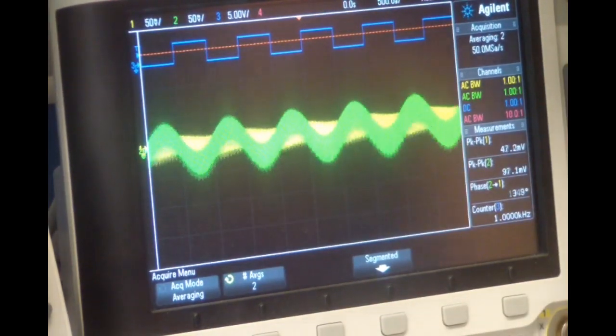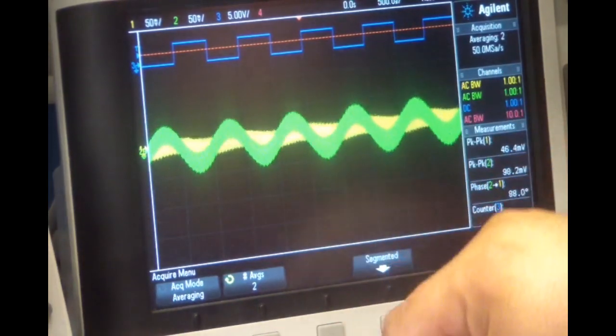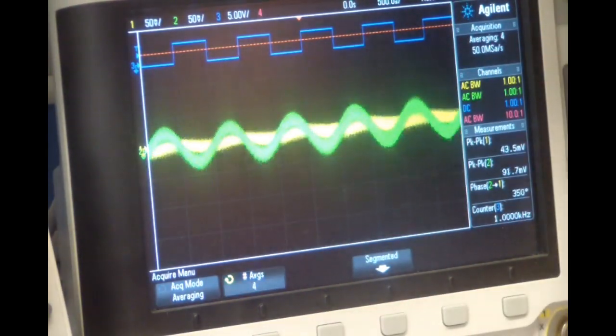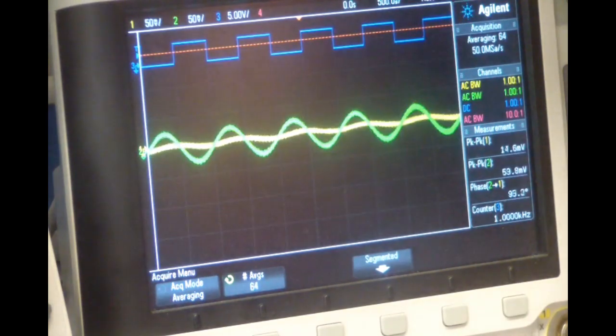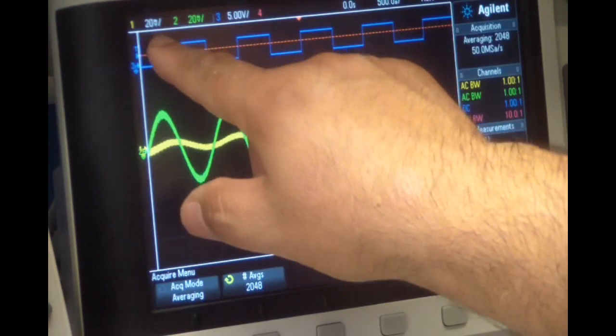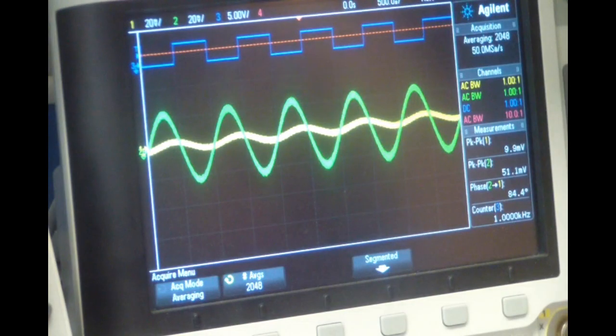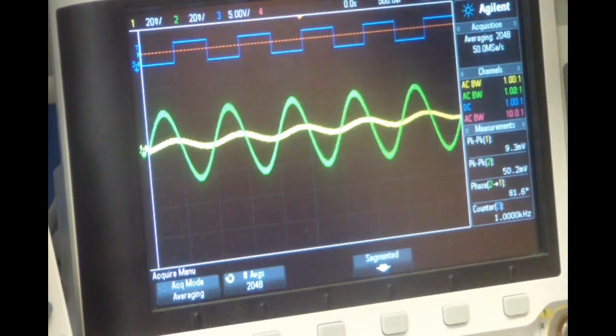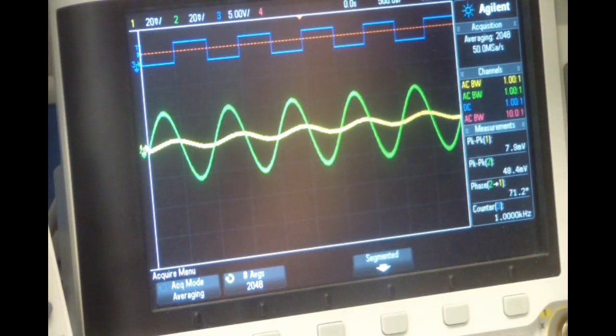Here we have the signal and you can see, you still have a little bit of noise, but if you average it, increase the average, you can see that it starts filtering out the signal. And typically you want to get these with the same scale. So now we can see our injection signal.